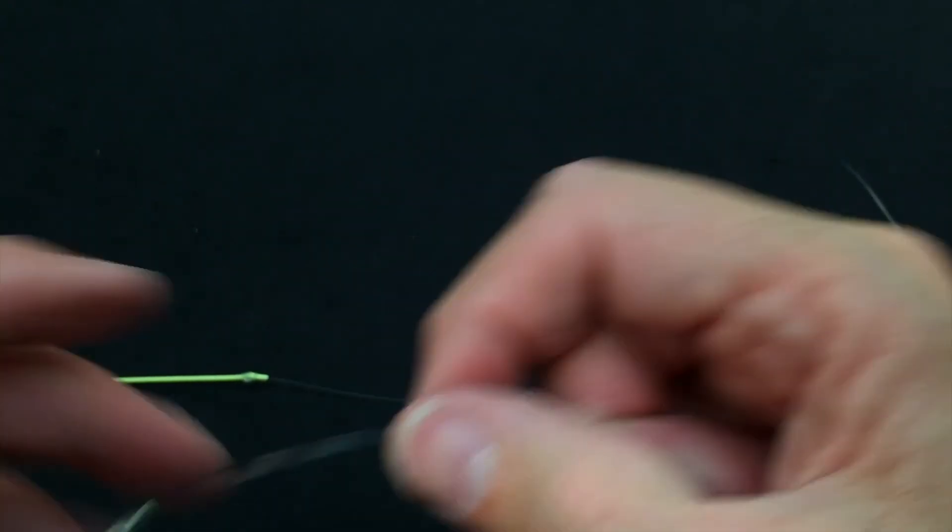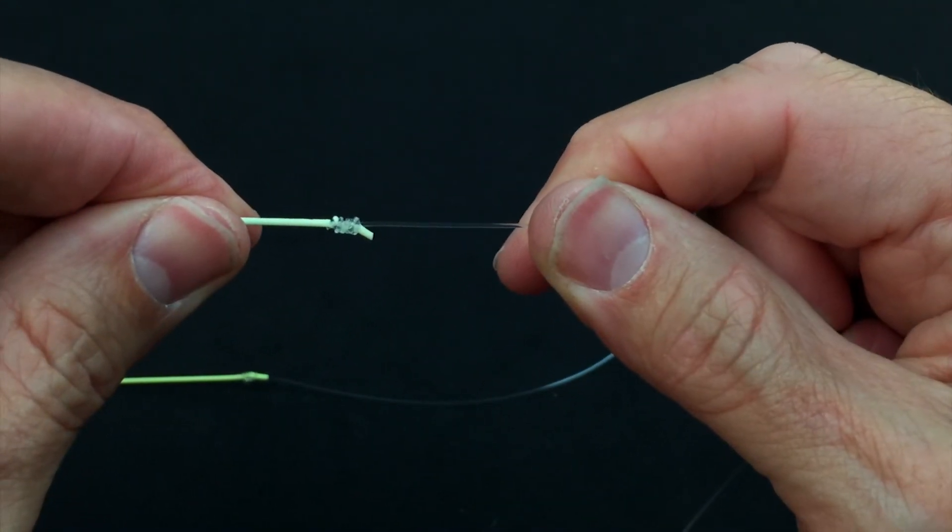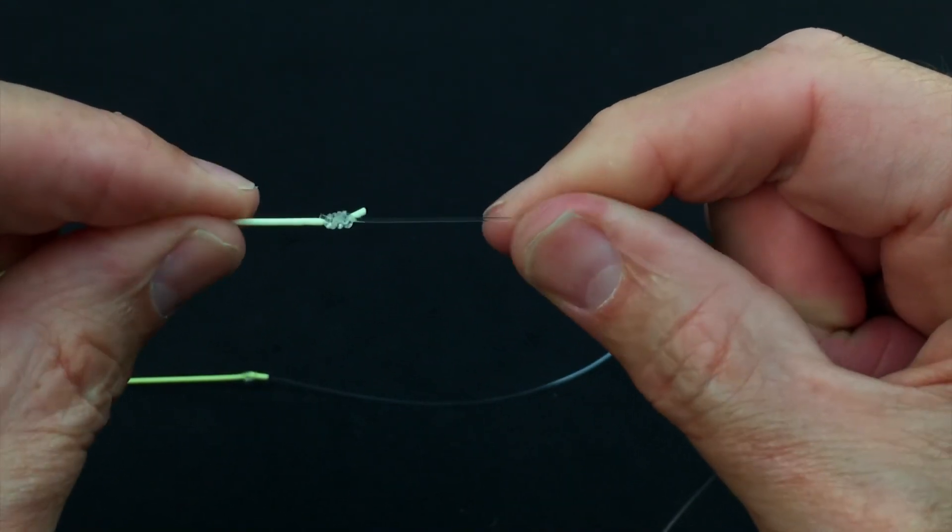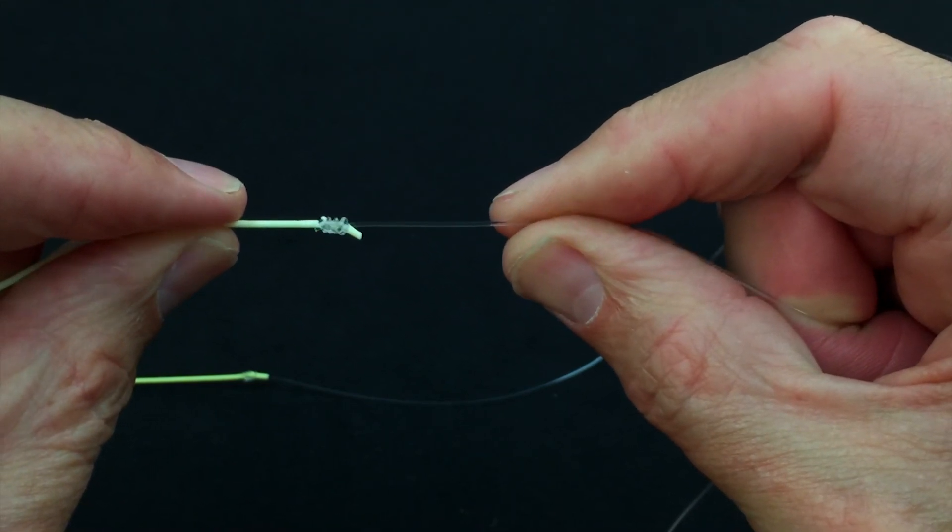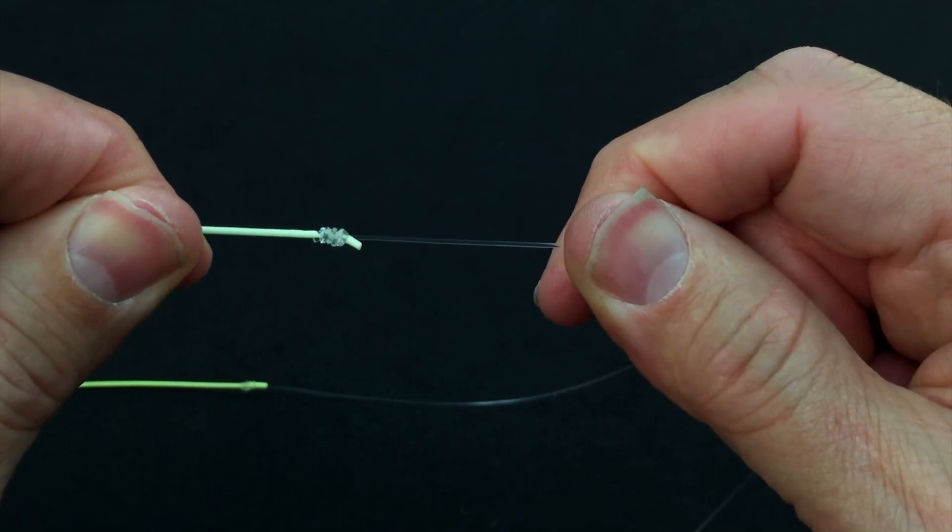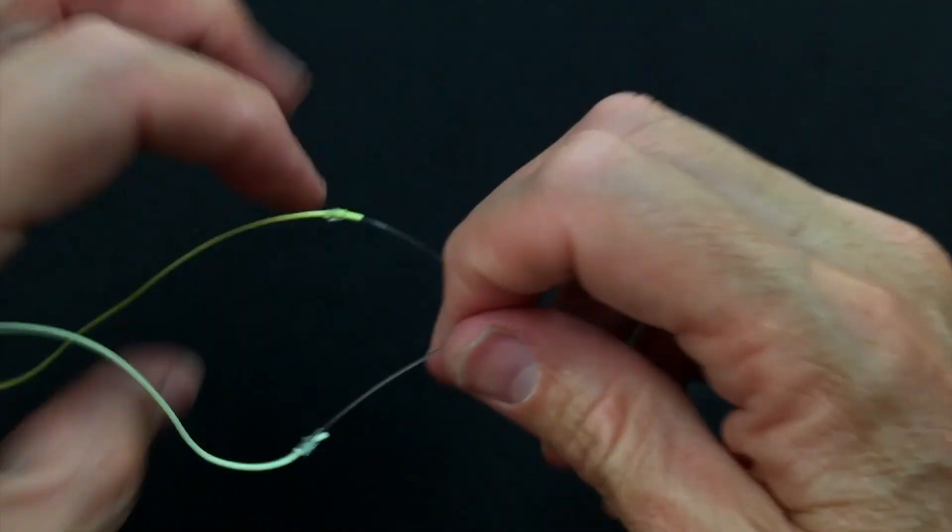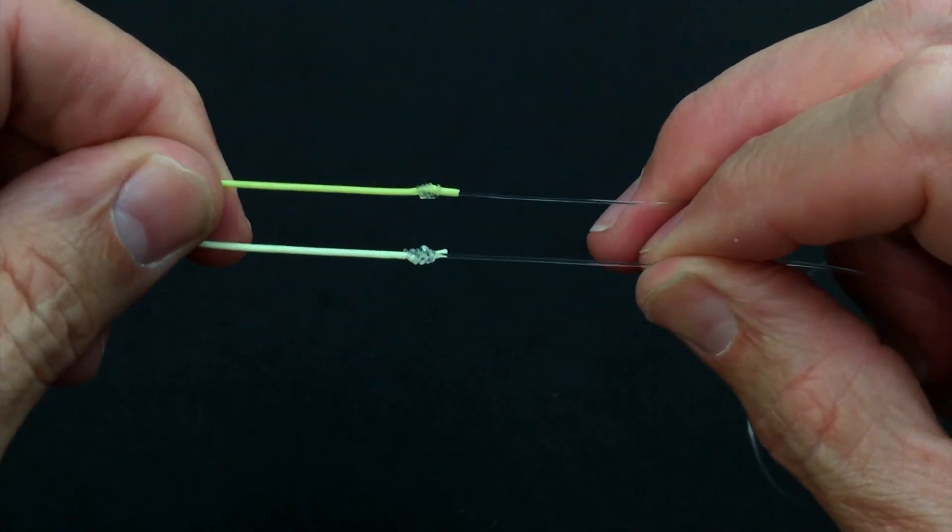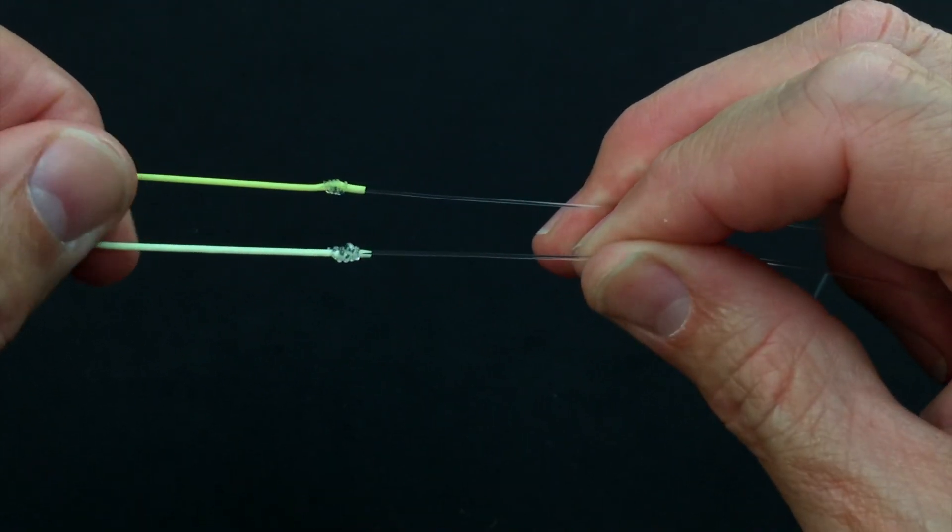With a nail knot, the leader comes out of the top end or the bottom end of the line. And so when you're winding this through a rod ring, you can get this tag, it can be a stub, it can get caught in there. This is a much smoother transition through the rod rings, because the leader comes out of the center of the fly line, then on top or underneath the side.